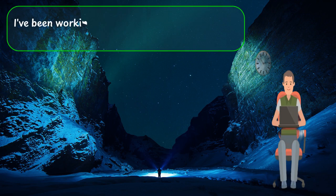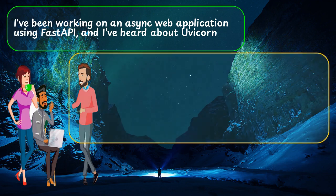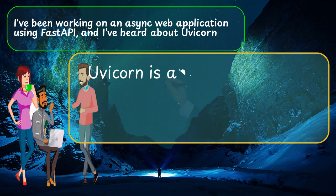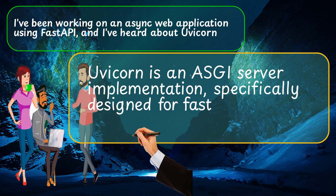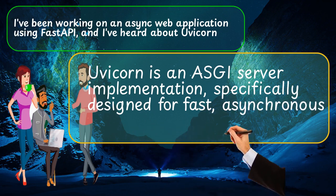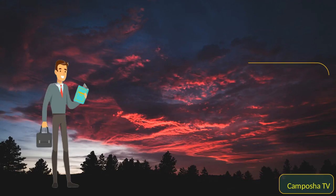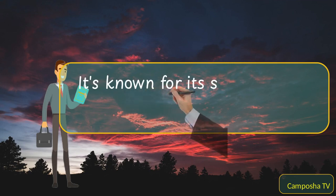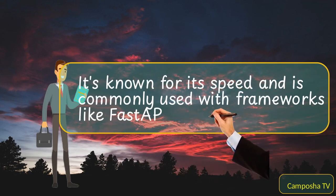I've been working on an async web application using FastAPI, and I've heard about Uvicorn. Can you tell me more about it? Uvicorn is an ASGI server implementation, specifically designed for fast, asynchronous web applications. It's known for its speed and is commonly used with frameworks like FastAPI and Starlette.